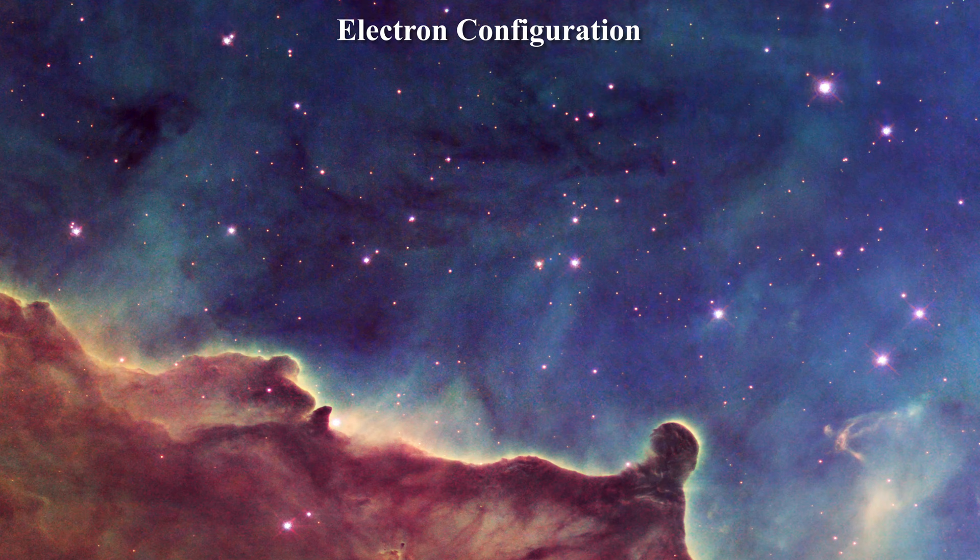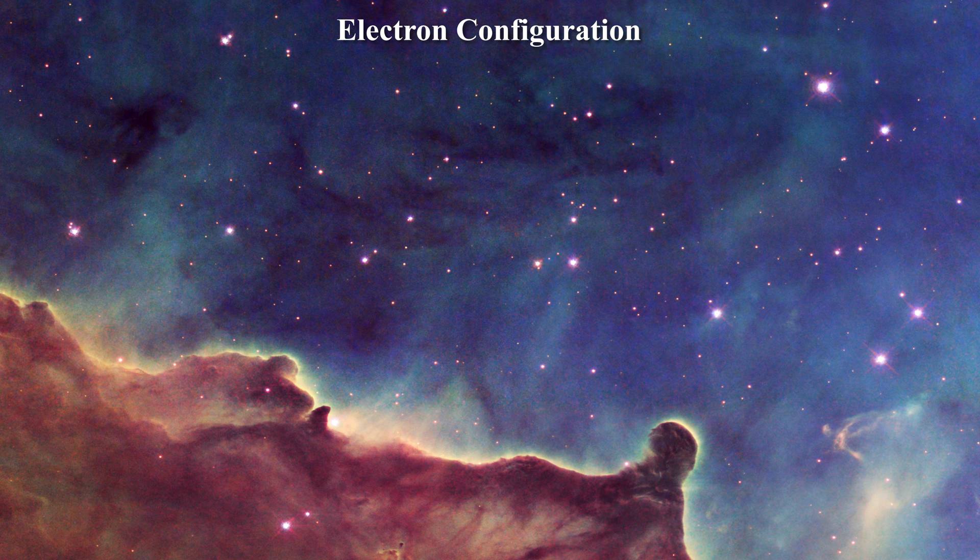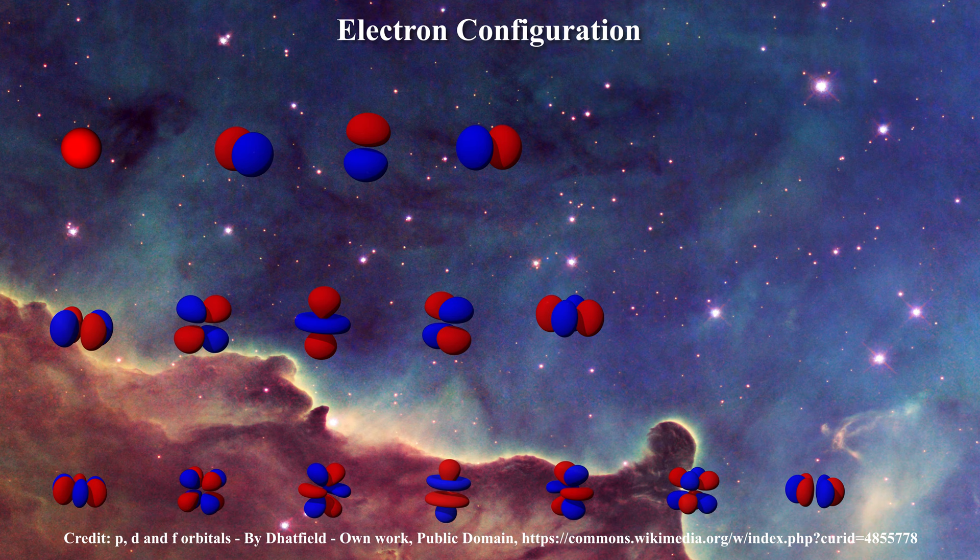We are leaving astrophysics for a moment and turning to electronic configurations, Grotrian diagrams and term symbols. We begin with how electron configurations are determined for an atom or ion. Electrons in atoms are contained in electronic orbitals, which represent a probability function of finding the electron in space at a particular location around the nucleus.